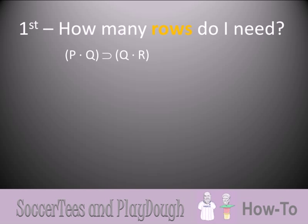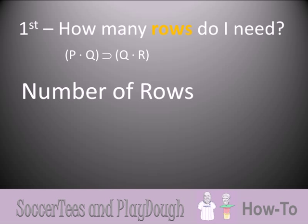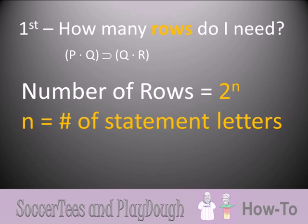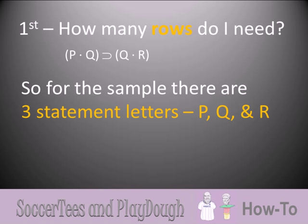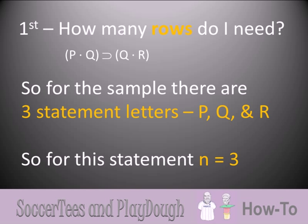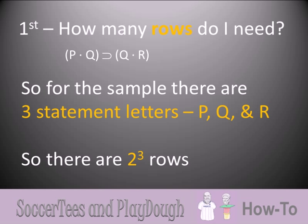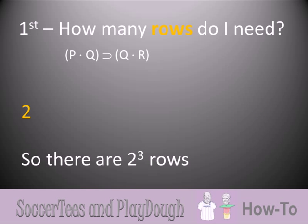First, how many rows do I need? The number of rows is given by the formula 2 to the n, where n is the number of statement letters that appear in the statement. In this case we have three statement letters — P, Q, and R — so n is 3. That means 2 to the 3 rows, which is 2 times 2 times 2, equaling 8 rows.